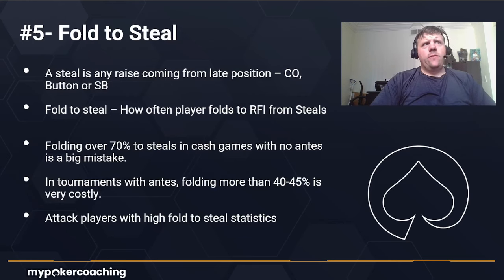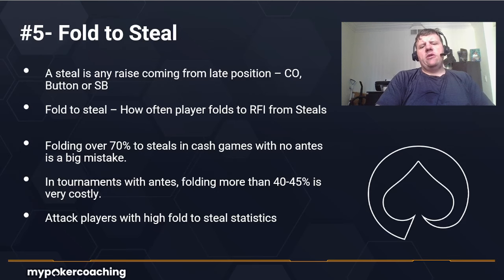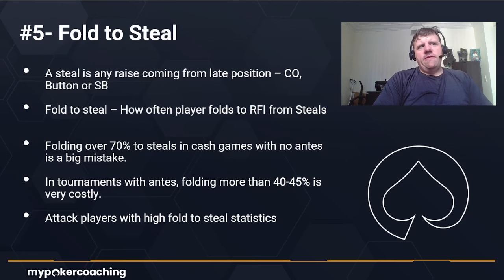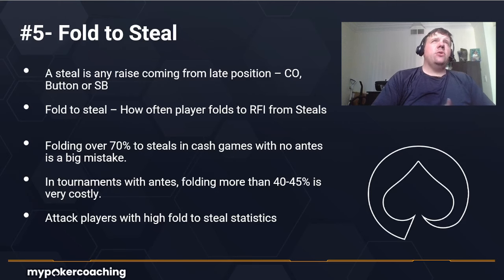The final preflop stat — and maybe the most important — is Fold to Steal. A steal is any raise from late position: the cutoff, the button, or the small blind. Fold to steal measures how often a player folds to raises from those positions. In cash games with no antes, folding 70 percent or more of your big blinds is a big mistake. In tournaments with antes, folding more than 40 percent is very costly. The big blind is the most important position in poker and the small blind is second, due to the massive pot odds and forced bets — you have to play a lot of hands and reduce your loss rate.